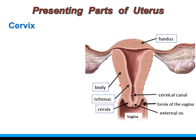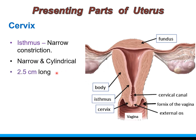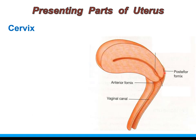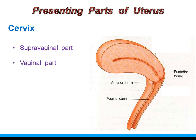The cervix begins at a narrow constriction known as the isthmus, which is the junction of body and cervix. The cervix itself is a narrow cylindrical part, 2.5 cm in length. At birth, it is two times larger than the body, whereas in the fully developed uterus it forms only one third of the body. Depending on the attachment of the vaginal wall, the cervix is divided into an upper supravaginal part and a lower vaginal or intravaginal part, meaning the vaginal part of the cervix lies within the vaginal canal.